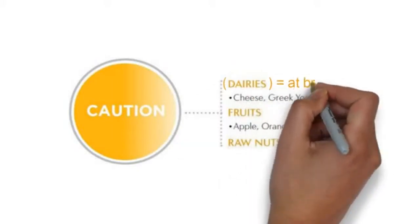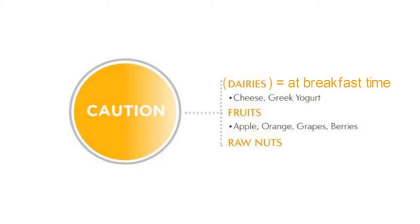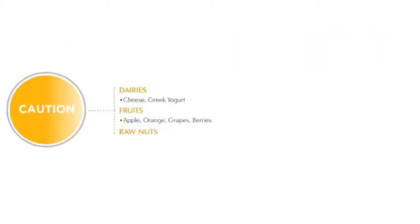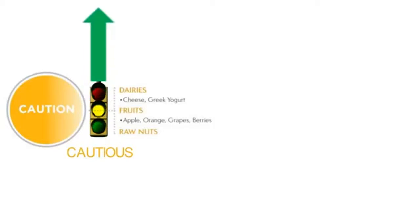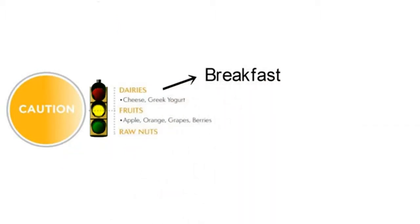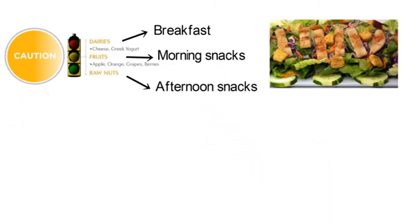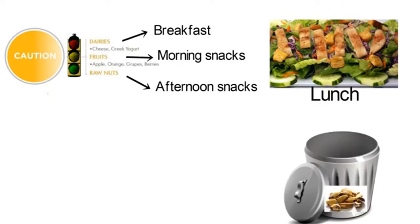Dairy is a yellow light food, and you should have it at breakfast time only — not at lunch, dinner, or any other time. So take out the cheese if you can. Nuts are also a yellow light food, and you eat those as your afternoon snack. Yellow light foods require caution — eating more than one portion may spike your insulin. That's why timing matters: dairy at breakfast, fruit as a morning snack, and nuts as an afternoon snack. Since we're eating this as lunch, set the nuts, cheese, and any other yellow light foods on the side.